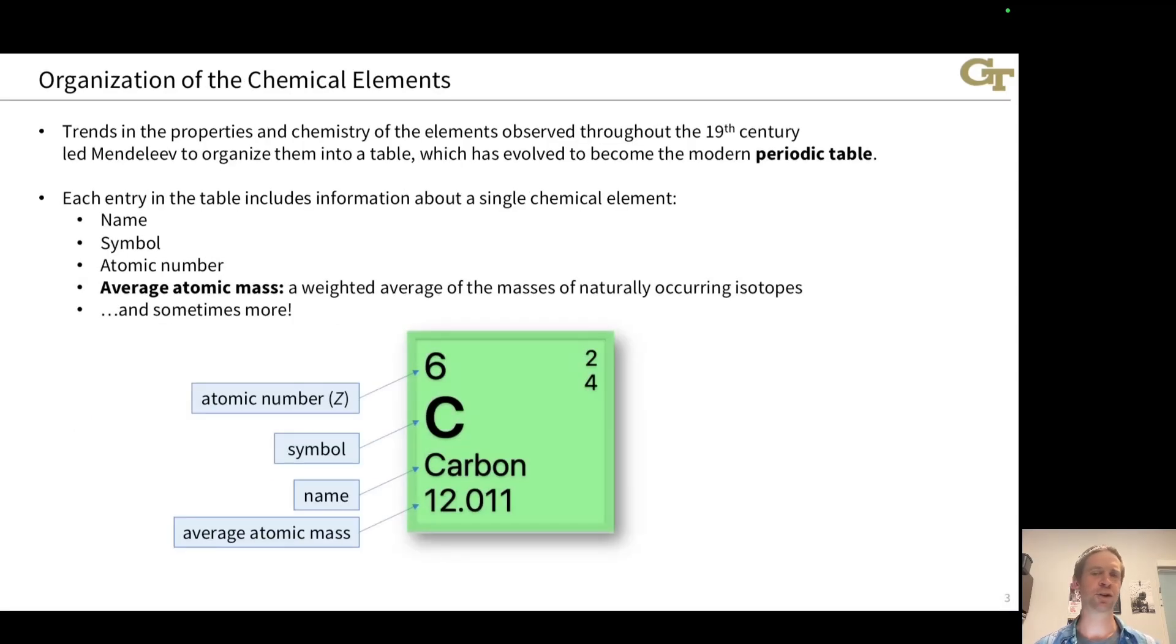Let's start with the essential information that you get about a chemical element from the periodic table. The periodic table is a table in which each cell corresponds to one chemical element. The table that has withstood the test of time started with the Russian chemist Mendeleev in the 19th century, but he was building on even earlier work that recognized trends and patterns in the properties and chemistry of the chemical elements. Mendeleev organized that information into a table, and that has become the modern periodic table.